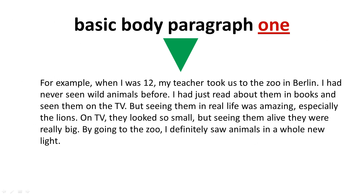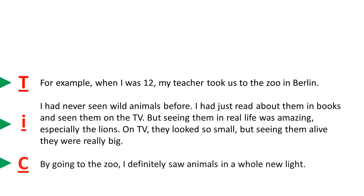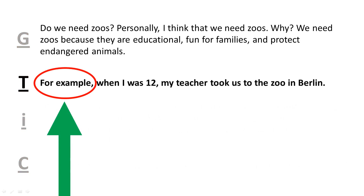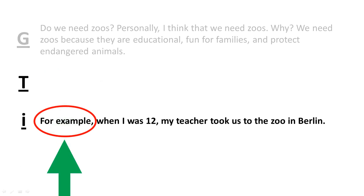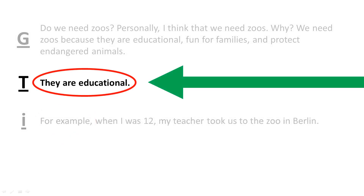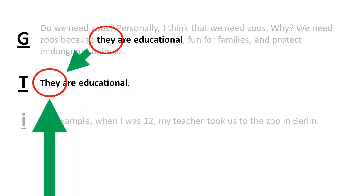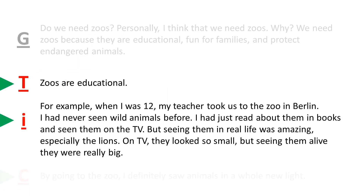I start by dividing body paragraph 1 into three parts: Transition, Illustration, and Conclusion. Next, I place the general statement above it. Note how the first sentence of this body paragraph starts with a transitional phrase — 'for example.' Instead of starting this body paragraph with a transition, I am going to move this transition and sentence down beside I for illustration. Next, I write a topic sentence beside T. Note how this topic sentence is the first reason in my general statement. I will change the pronoun 'they' to the subject noun 'zoos.' Body paragraph 1 now has a topic sentence, followed by an illustration and a conclusion.